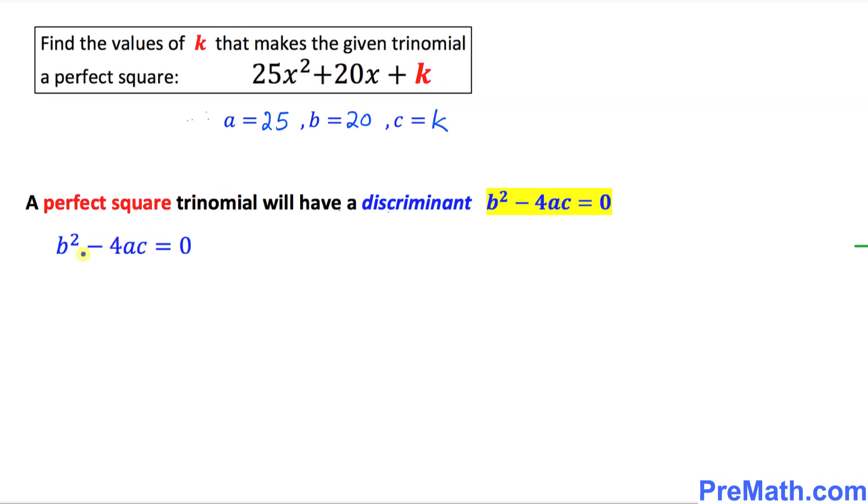Now we are going to calculate the value of b² - 4ac. And we know that in our case b is 20, so we are going to put down 20 squared minus 4 times a is 25 and c is k. And let's set it equal to 0. Let's simplify: 20 squared equals 400 minus 4 times 25 is 100k equal to 0.